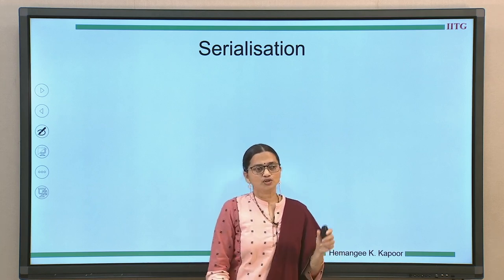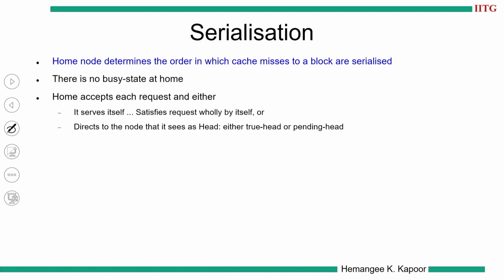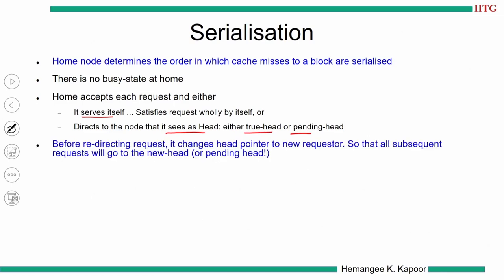Overall, all requests accepted by the home node get added as the head of the list — either they become the head and get serviced, or they remain in the pending list and eventually get serviced. The order in which they reach the home node is the order of serialization. In NUMAQ, the home node determines the order in which cache misses to a block get serialized, and there is no busy state at the home node.